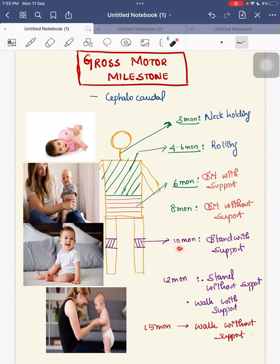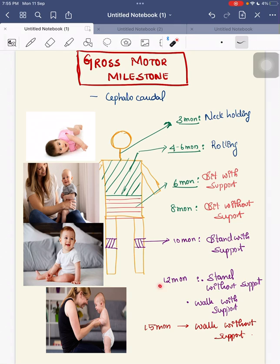At 10 months of age, the child can stand with support. You can remember the knee joints — the knee joints will begin their development. And in the sequential order, at 12 months of age, the child can stand without support and walk with support.